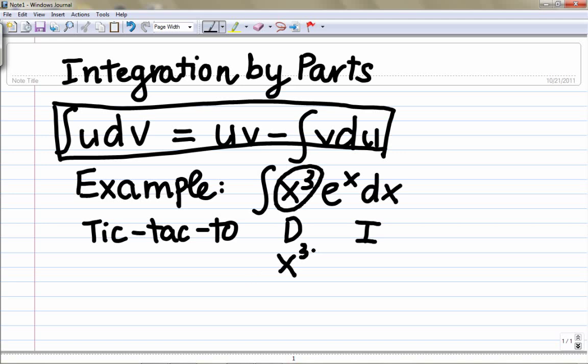So derivative of x cubed is gonna give me 3x squared. Derivative of 3x squared is gonna give me 6x, and derivative of 6x is gonna be 6. Derivative of 6 is gonna be 0.